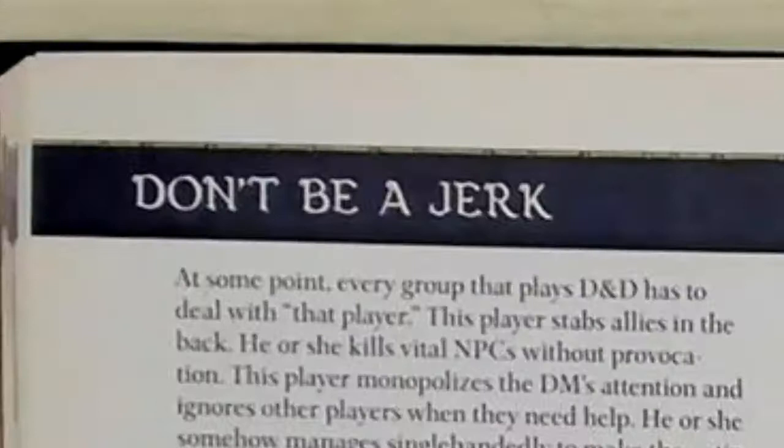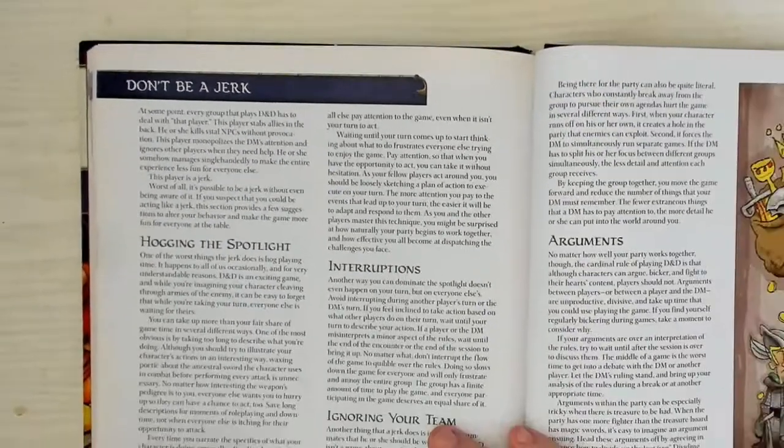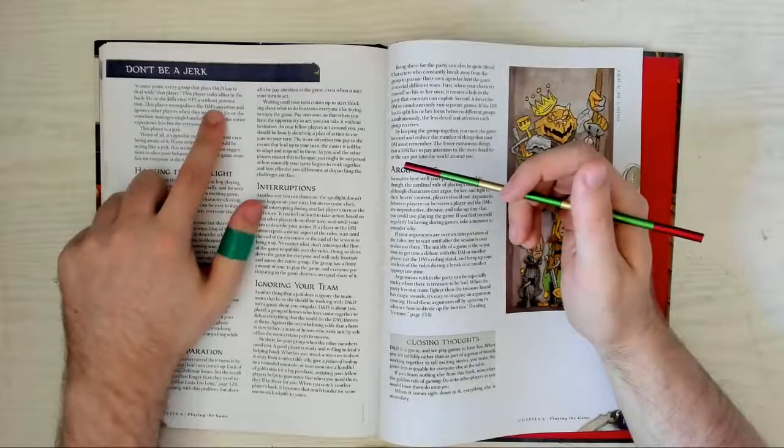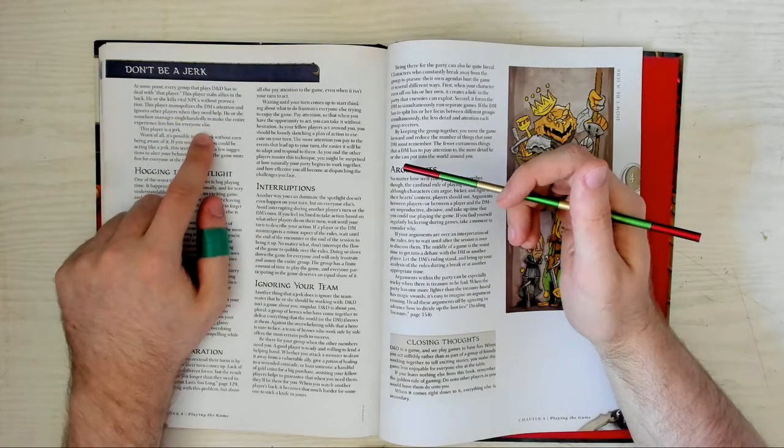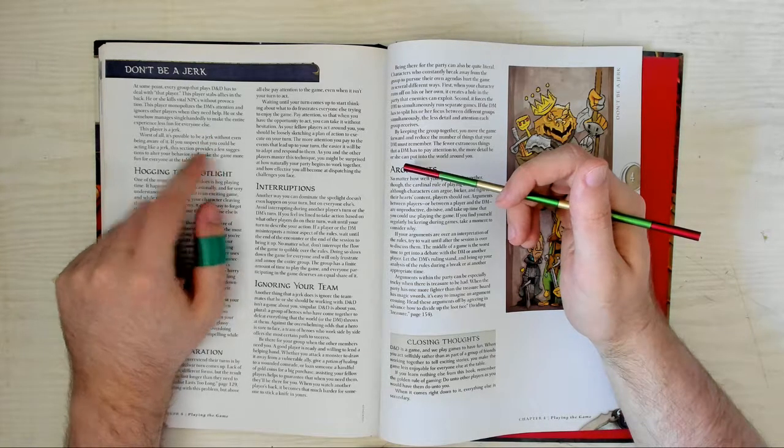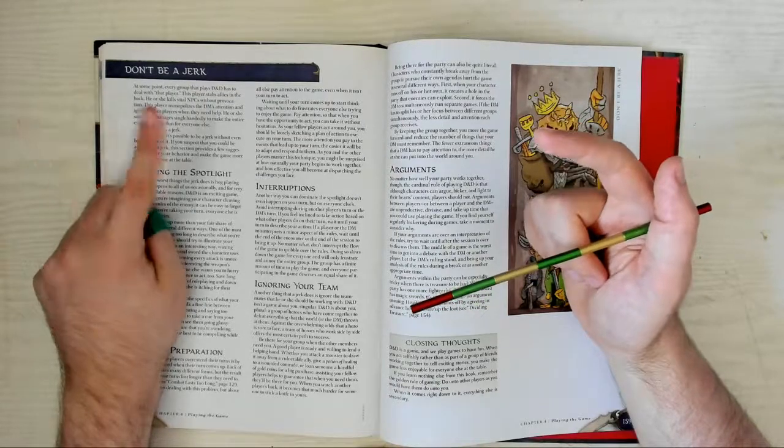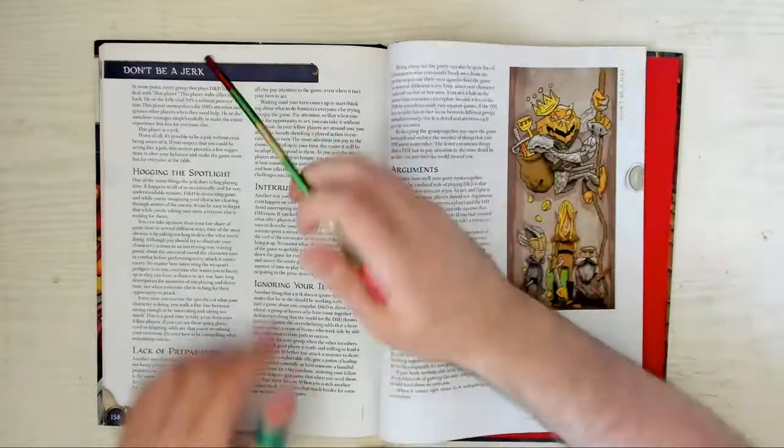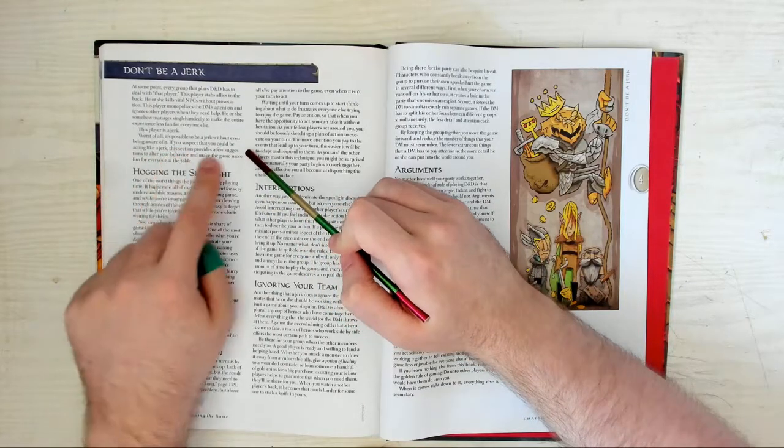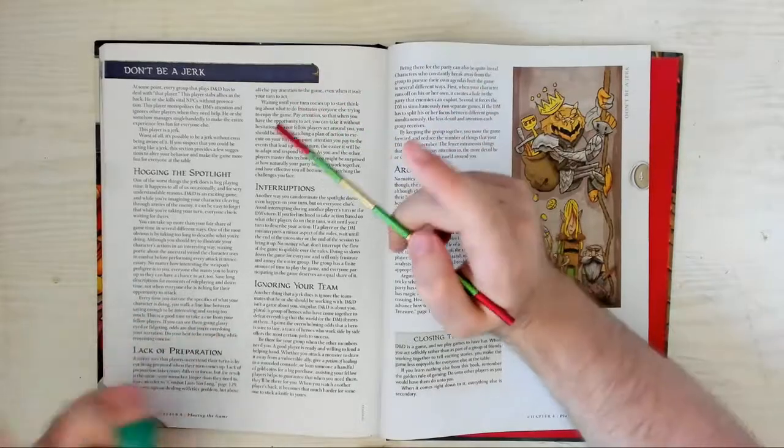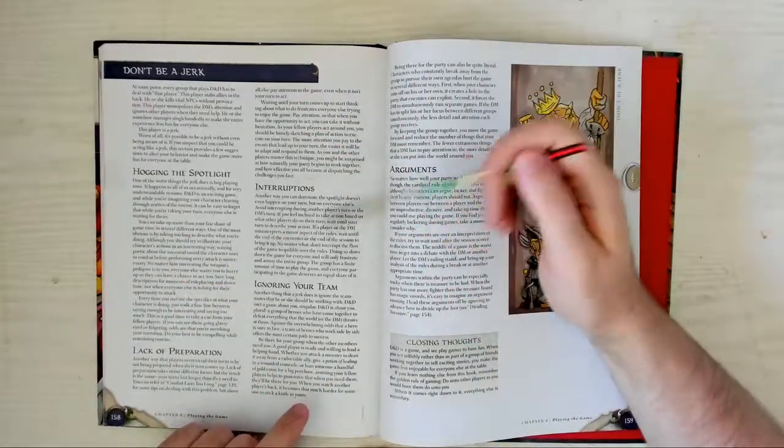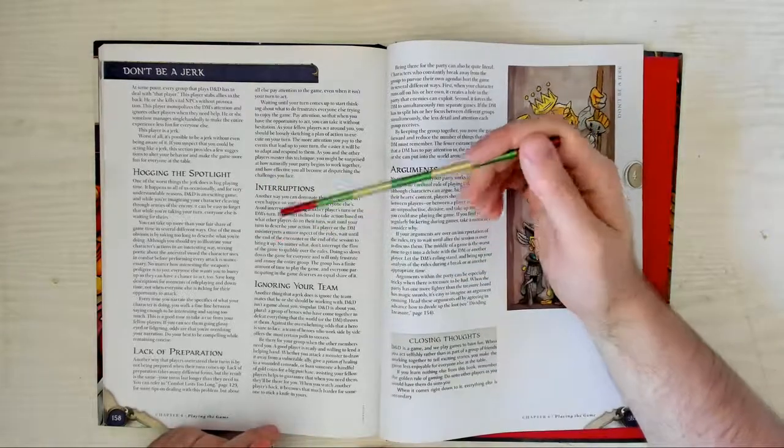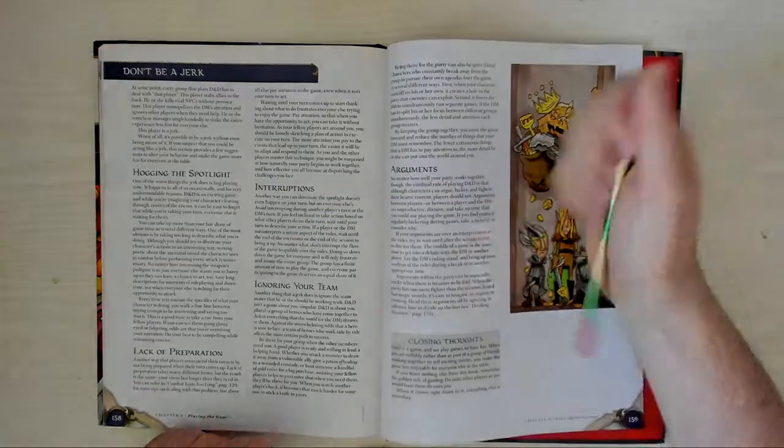Don't be a jerk. Jeez. They actually have a section called don't be a jerk. Okay. Here we go. At some point, every group that plays D&D has to deal with that player. No, they don't. They kill NPCs without provocation, hog the DM's time, and don't help the rest of the party. They somehow manage to make it less fun for everyone else. Wow, that's pretty damning. I guarantee you'll never see those words written in a wizard's product ever again. It's a gutsy move to not only admit that your game can suffer from toxic players, but to call them out on it in print is another thing. Oh, this bit. This bit here says, if you suspect that you could be acting like a jerk, this section provides a few suggestions. It doesn't go so far as to tell them to knock it off or to sod off, but perhaps that's for the best? It does give some solid ideas to regular issues, but if you have any common sense you can easily come up with it on your own. Don't take forever on your turn, don't ignore, interrupt or argue with anyone, and don't pinch their stuff. Best two pages in here, hands down.